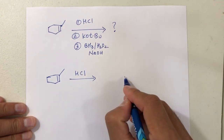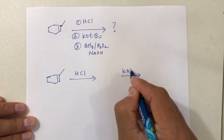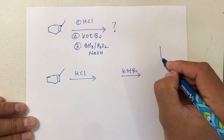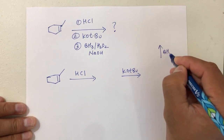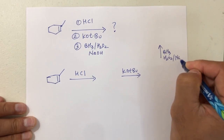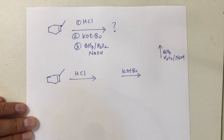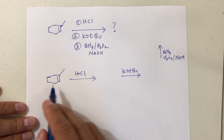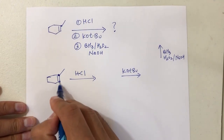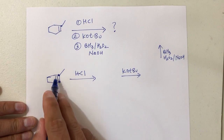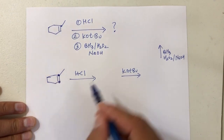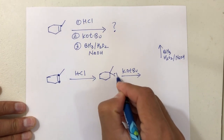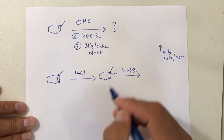Then the product of the first reaction will react with potassium tert-butoxide. And whatever we get, that will react with BH3, H2O2, NaOH. So here we are adding HCl across a double bond — it is an addition reaction because we are starting with a double bond. These two carbons are not the same, so H will go here and Cl will go here.